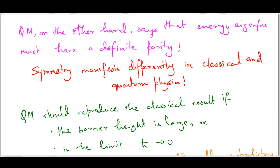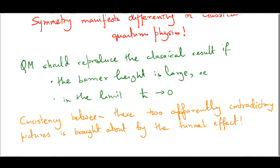Quantum mechanics, on the other hand, says that the energy eigenfunctions for this parity-symmetric Hamiltonian must have a definite parity — the wave functions must be either even or odd. So the symmetry manifests quite differently depending on whether you use classical or quantum physics. On the other hand, we expect quantum mechanics to reproduce the classical result if the barrier is very large — a particle in the left-hand well should not even be aware of the existence of the right-hand well. Consistency between these two apparently contradictory pictures is brought about by the tunnel effect that we have been studying.